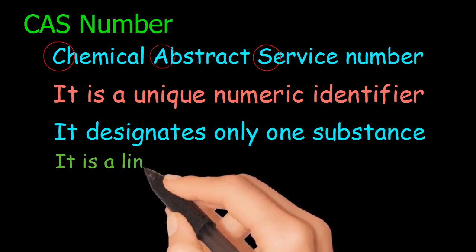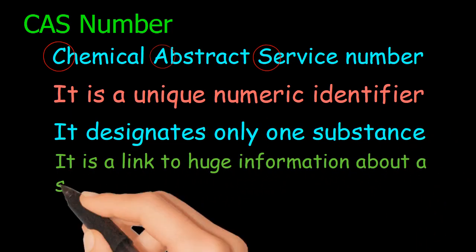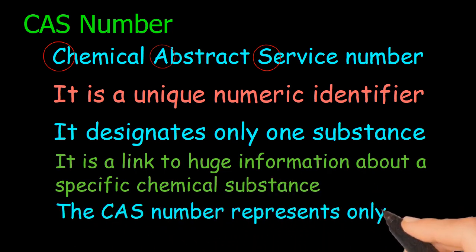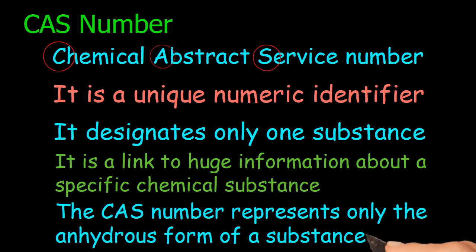It designates only one substance. It is a link to huge information about a specific chemical substance. The CAS number represents only the anhydrous form of a substance.